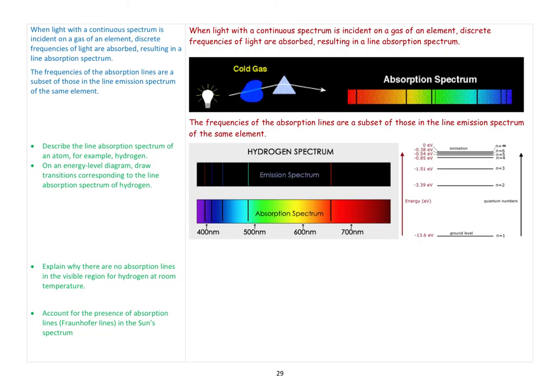We've learnt about emission spectrum and the idea that when a hot gas or vapour of an element, or an excited gas or vapour — because we could use an electrical discharge — is excited, it will release light with frequencies or wavelengths corresponding to the energy level gaps between the energy levels in that atom.